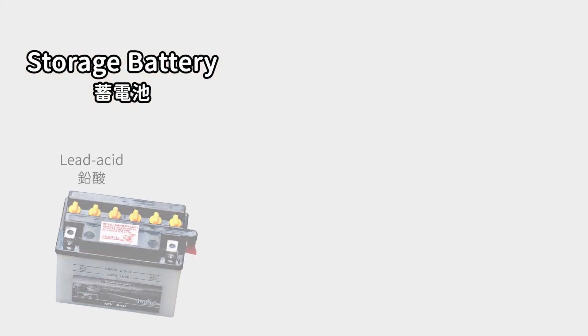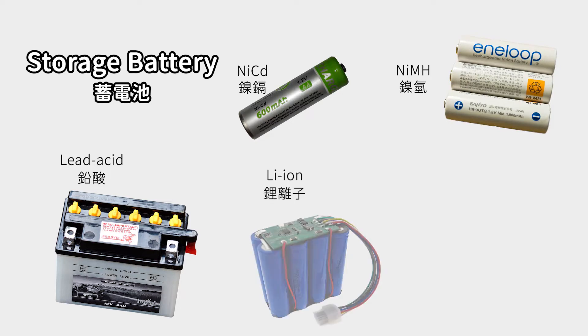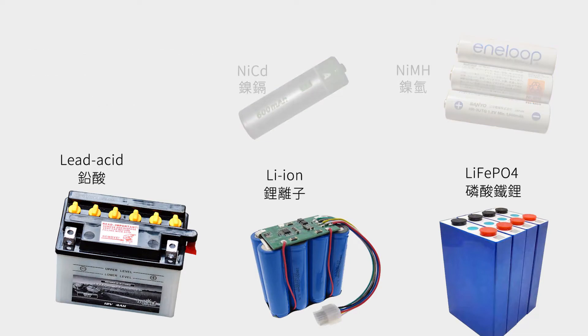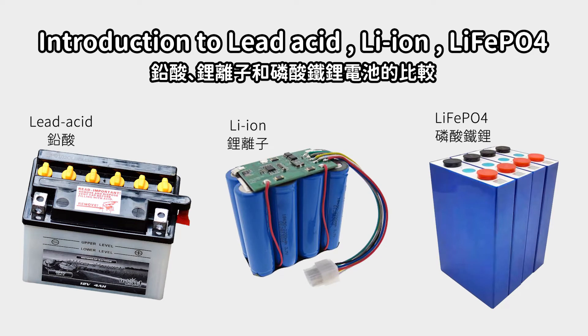Some of the common batteries are lead-acid, nickel-cadmium, nickel-metal hydride, lithium-ion, and lithium-ion-phosphate batteries. Among them, nickel-cadmium batteries and nickel-hydrogen batteries have memory effect. They are not suitable for use as RV energy storage. Therefore, we analyze only the characteristics of lead-acid, lithium-ion, and lithium-ion-phosphate batteries.